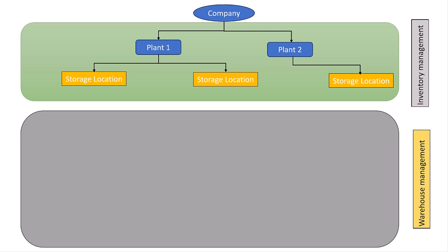A plant can have multiple storage locations based on the process and requirements. For example, for an inbound process we can have a different storage location, for an outbound process a different one, and for the scrapping process another one. So a plant can have multiple storage locations based on need and process.